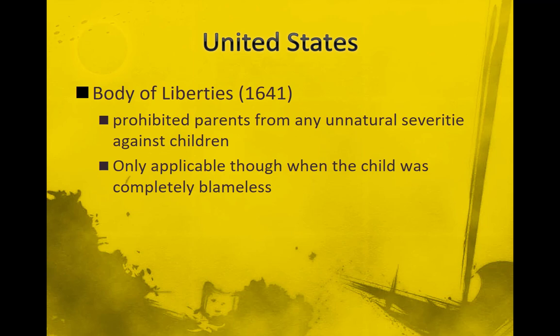Although they had a law preventing parents from going too far, their view about children was quite different. They also had a law that provided a death sentence to any child over 16 who cursed or struck their parent. One law seems to protect children, the other does not. There was no evidence that the Puritans ever put a child to death, but they did have some of the strictest views about kids. In fact, we can thank the Puritans for sayings like 'children should be seen but not heard' and 'spare the rod, spoil the child.'